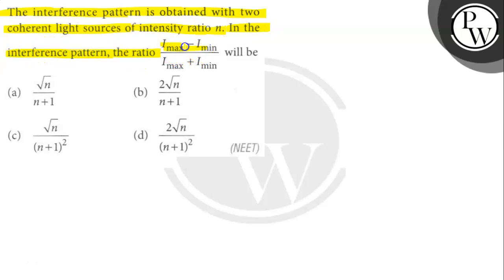the ratio (I_max - I_min)/(I_max + I_min) will be what? Okay, let's find out. So what is given here? I₂ equals n times I₁.